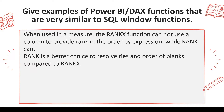When used in a measure, RANKX cannot use a column in the ORDER BY expression, while RANK can. For example, if I want to rank customer sales by their dates — first sale, second sale, third sale — I can do that as a calculated column, but not as a measure. This matters because when displaying in a table, some dates might be filtered out, and the overall ranks should change accordingly.